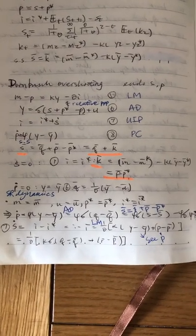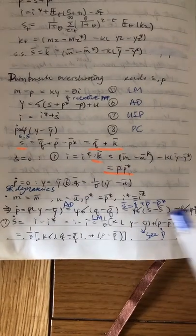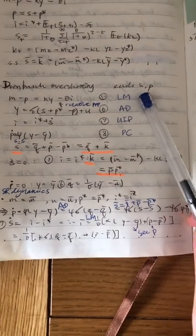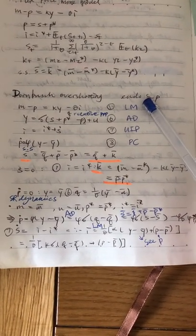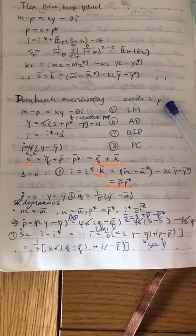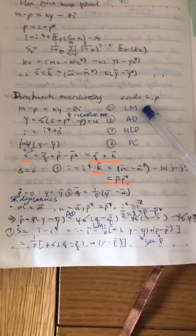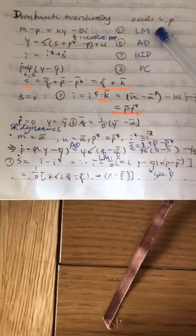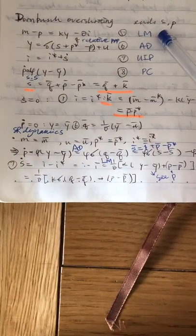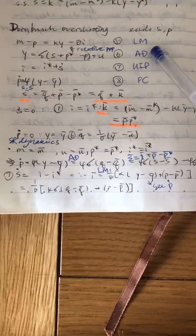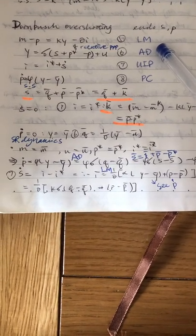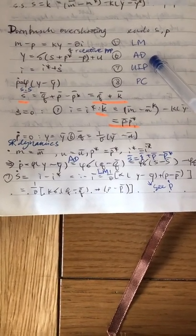This video is going to be about the Dornbusch overshooting model where we have some endogenous exchange rate and price. So we have a four equation system here, a LM equation which is the money market equilibrium and AD equation.